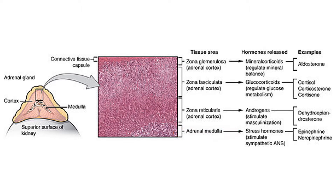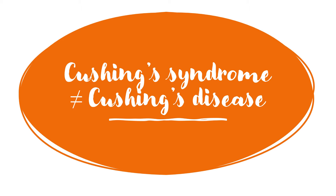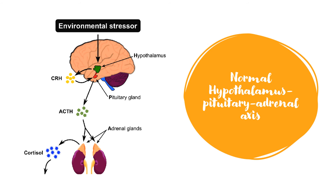So looking at these, you can kind of imagine what symptoms might come about if you are under or over producing these hormones. Specifically, we're only going to be looking into Cushing's and adrenal insufficiency today. The pathway in which the adrenal glands release cortisol is called the hypothalamus-pituitary adrenal axis, or HPA for short. If something goes wrong within this pathway, you may produce too much or too little cortisol.